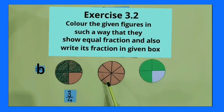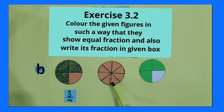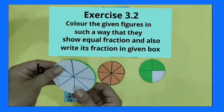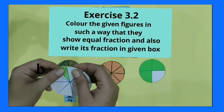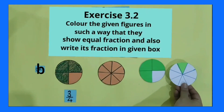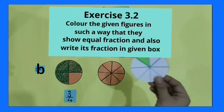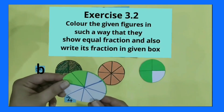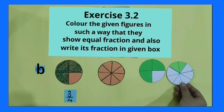Now let's start with the second shape. It is divided into eight equal parts. We have to color this shape in such a way so that its fraction becomes equivalent to three by four. I have a circular shape divided into eight equal parts. Now I color one part. Compare these two shapes — are they equivalent?